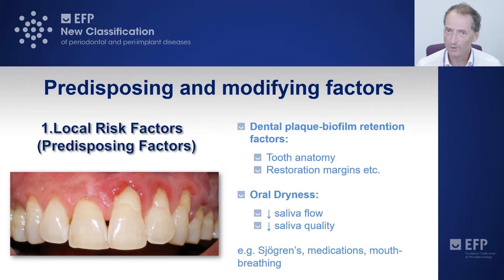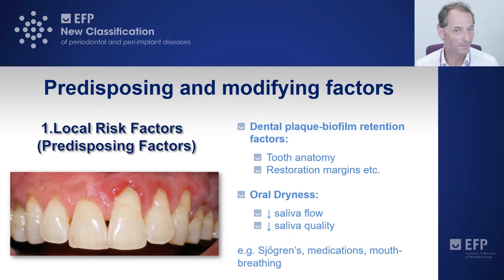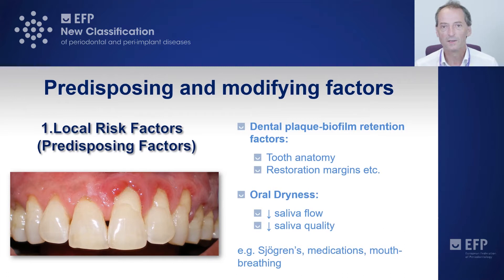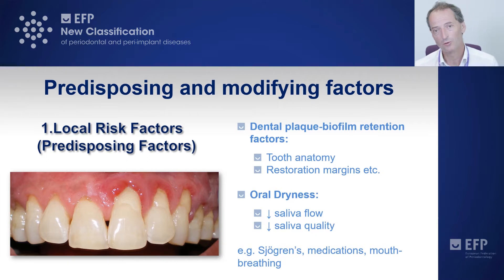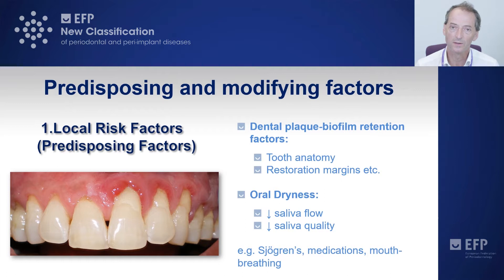Not xerostomia itself, because that is a symptom the patient suffers from — they feel as if they have a dry mouth, but the saliva flow and moisturization of the mouth might be quite normal. Oral dryness is a better term, and it can arise due to a reduction in saliva flow or a thickening or reduction in quality of saliva. Both can lead to reduced natural removal of the plaque biofilm from the teeth, and therefore be a local risk factor for the development of gingivitis and periodontitis.